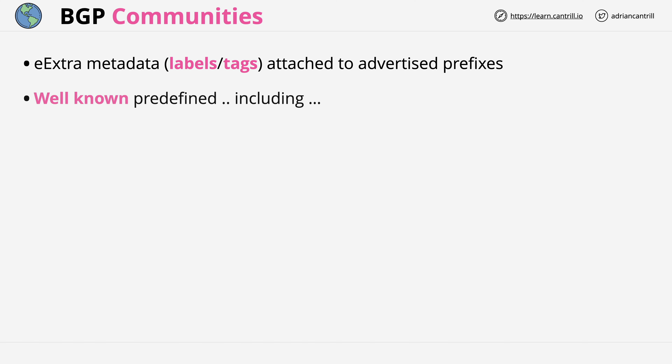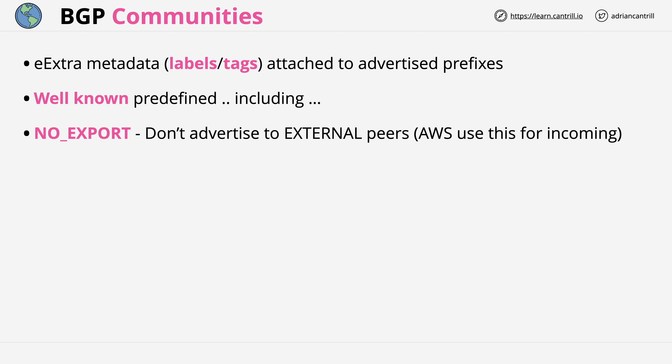You have a few well-known predefined ones, including no-export, which is a directive not to advertise any routes that you learn to any external BGP peers. Then there's no-advertise, which is a directive not to advertise to any other BGP peers — this includes internal or external. AWS uses no-export for any routes they advertise to you, because they don't want you to advertise to other BGP entities you're peered with.